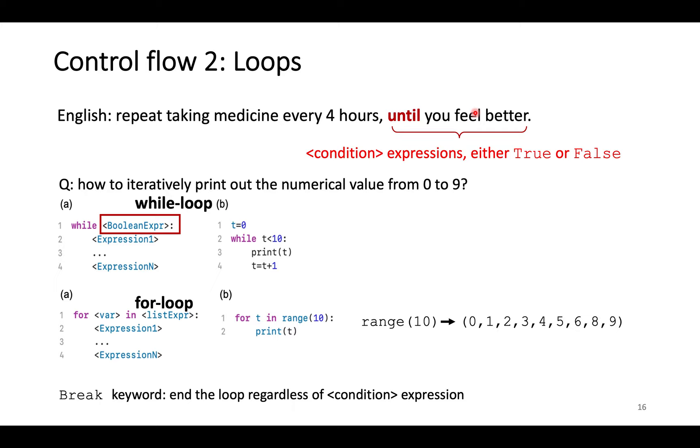The example here is to print numbers from 0 to 9. While loop is to run the code block until the condition expression signifies true. Notice, the variable in the condition expression should be changed in the code block each time. Here is the example, the variable t increases by 1 in each iteration.